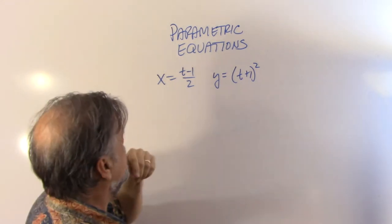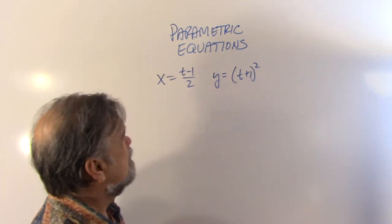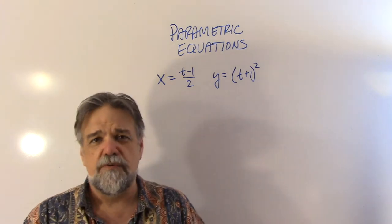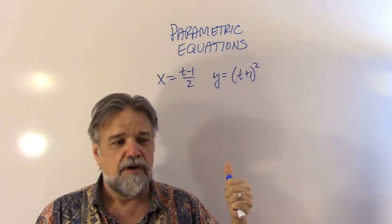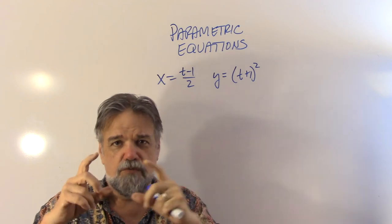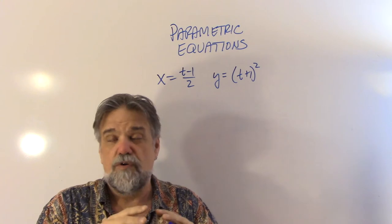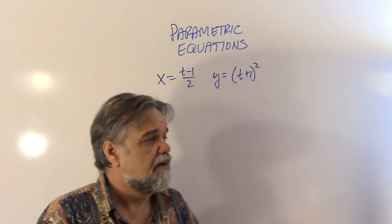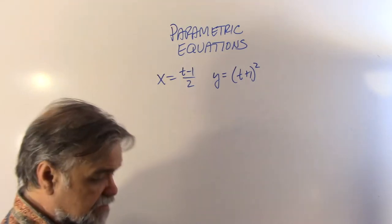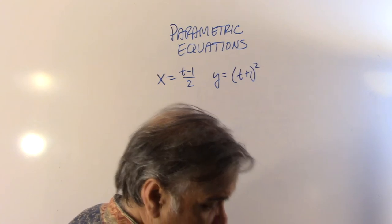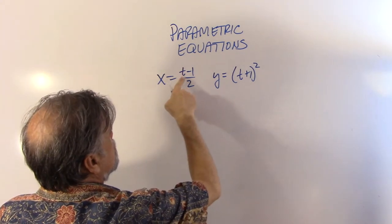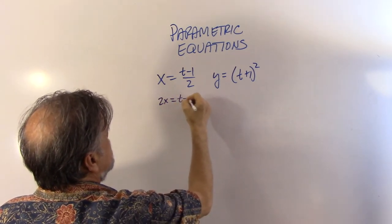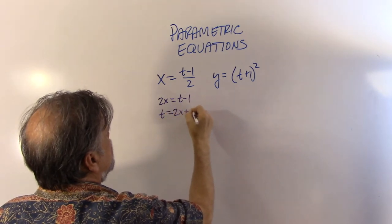T is our parameter, and x is defined to be (t-1)/2, and y is defined to be (t+1) squared. And what I want to do is I want to go from this to y being a function of x, or if not y being a function of x, just some equation where we have x's and y's and no t's. So how are we going to do this? Well, let's do the same thing we did last time, which is solve this one for t. So that means 2x is going to be t minus 1, and t will be 2x plus 1.